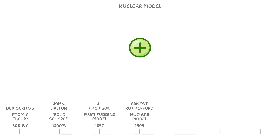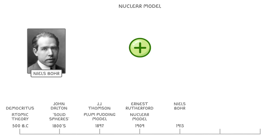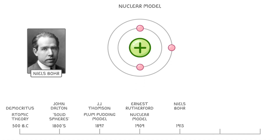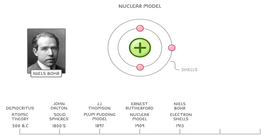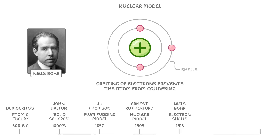Just four years later though, in 1913, a man called Niels Bohr suggested a solution. He suggested that the electrons orbited the nucleus in a similar way to how the planets orbit the sun, and also that they were held in shells. This idea was really important, because the orbiting of the electrons is what prevents the atom from collapsing.